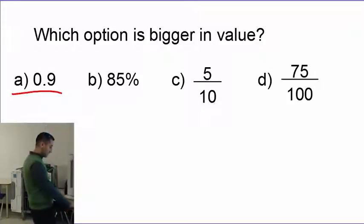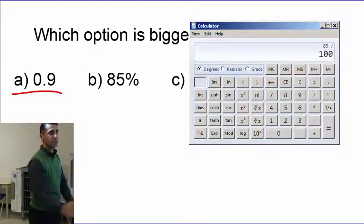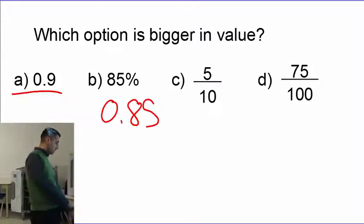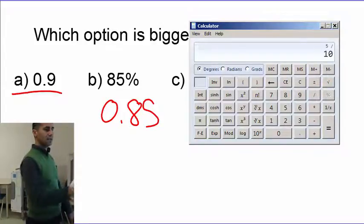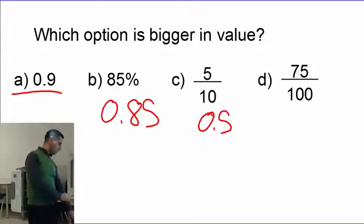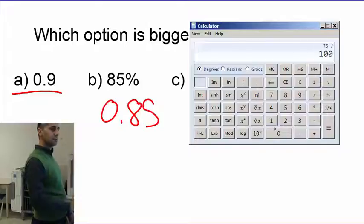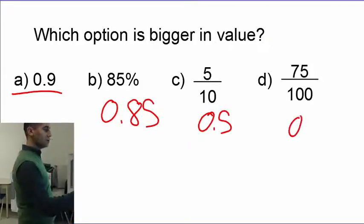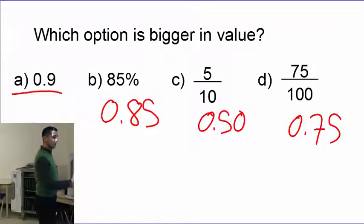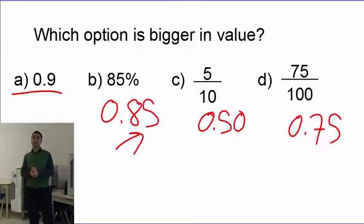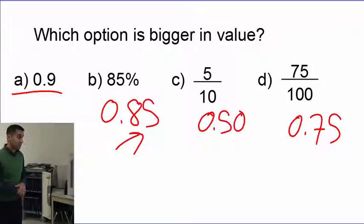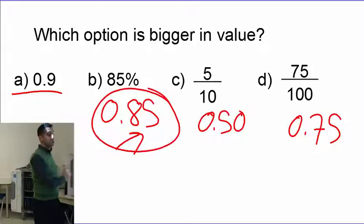Last example — which option is bigger in value? This one is already decimal. 85 percent divided by 100 is 0.85. Then 5 over 10 — that's a half, but let's calculate: 5 over 10 is 0.5. Last, 75 over 100 — that gives me 0.75. I've got two digits here, one digit here. Before I add zero, look — I see 0.9, then 0.85, 0.50, and 0.75, so it might seem like I want to go with 0.9.